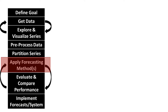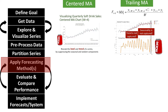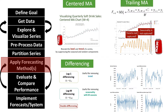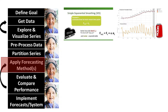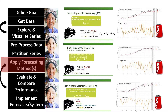In weeks four to six, we introduced several types of forecasting methods. In week four, we looked at smoothing methods. We started with a centered moving average, which is useful for data visualization, then looked at the trailing moving average for forecasting and saw it's not a good idea to apply to a series with trend and/or seasonality. That motivated our discussion of differencing as an operation that helps remove trend and seasonality. We then covered the exponential smoothing family: simple exponential smoothing, Holt's exponential smoothing, and Winter's exponential smoothing.